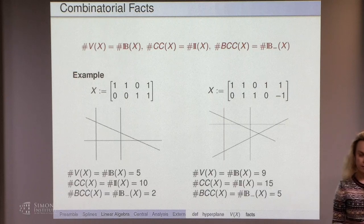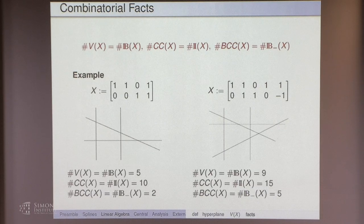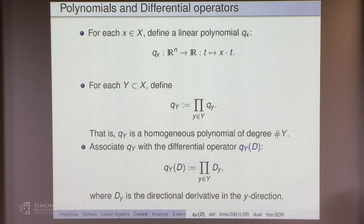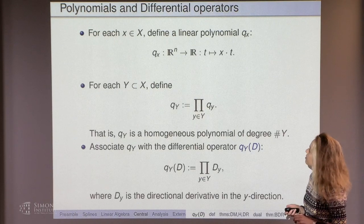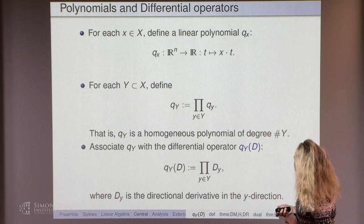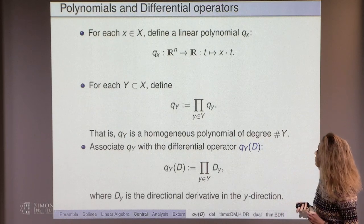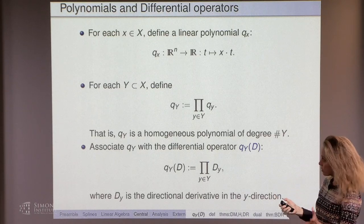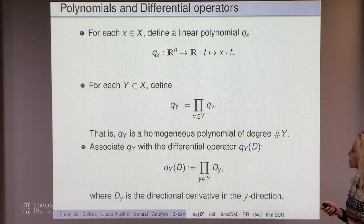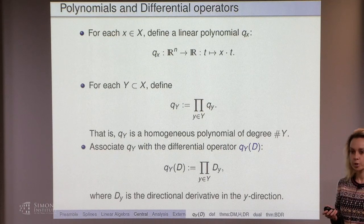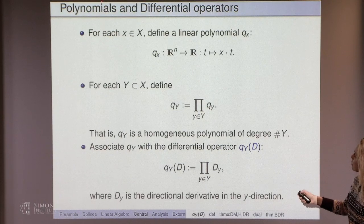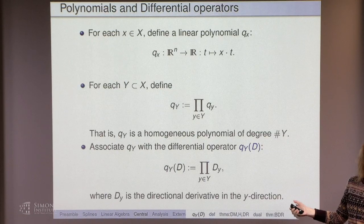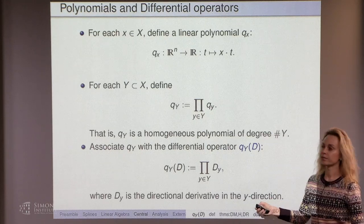None of this is a coincidence — these are all true facts. Here is another baby example. I apologize that this is all in 2D; it's a little bit harder to show how things get counted in 3D or 4D. The number of bounded connected components — you have the hyperplane arrangement, which splits the plane into components, some of them unbounded and some bounded. So if you only count the number of bounded connected components, this number magically is equal to the number of internal bases.